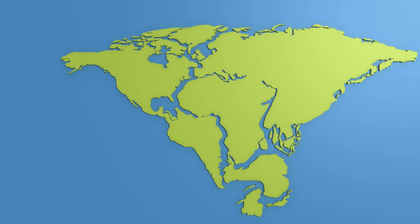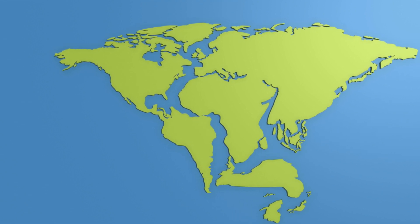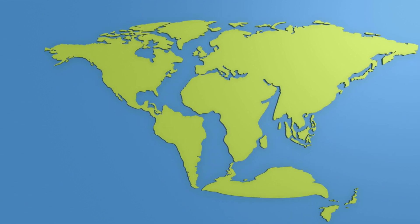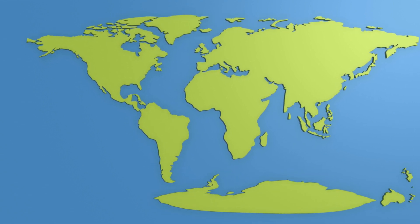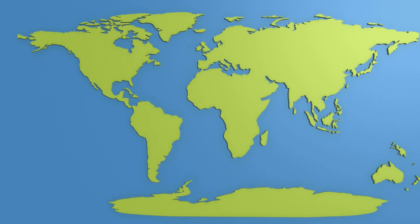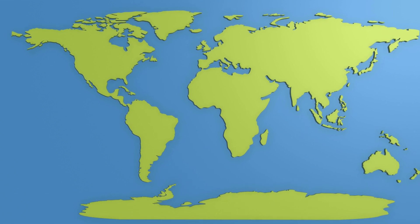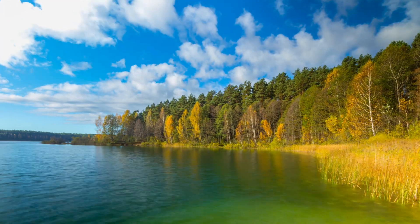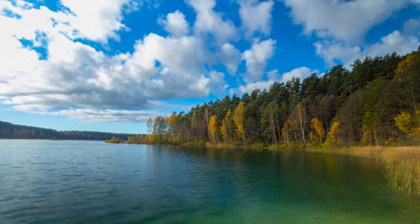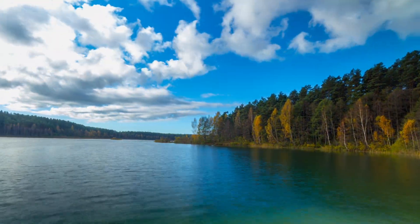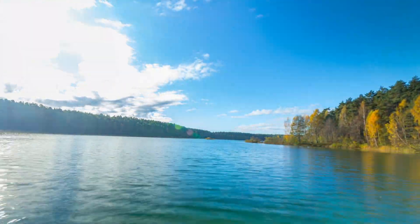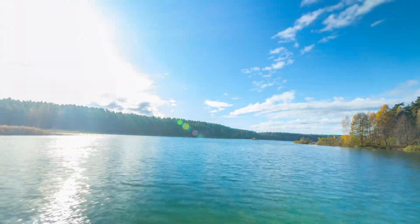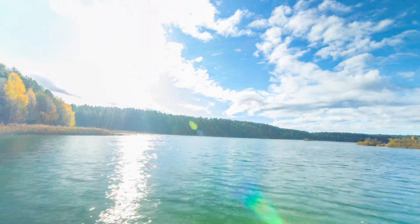Ants evolved while Pangaea was still a supercontinent. The continent started to separate 200 million years ago during the Triassic period, right up until around 50 million years ago, giving ants 16 plus million years to migrate across the supercontinent, splitting ant species between the two newly forming supercontinents, Eurasia and Gondwana. Many of the fracturing land masses during this time period remained connected by land bridges.